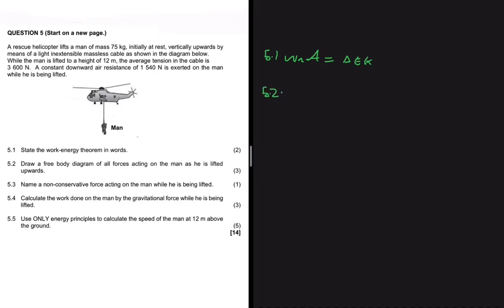If you look at this sketch, it kind of looks scary, but the questions are not so difficult themselves except for 5.5, which is a bit challenging. So stay with me until then. Question 5.2 asks us to draw a free body diagram of all forces acting on the man as he is lifted upwards.